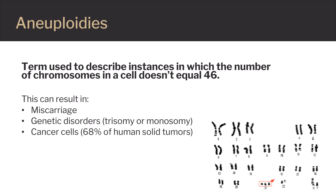Some cancer cells also have abnormal numbers of chromosomes. About 68% of human solid tumors are due to aneuploidies.